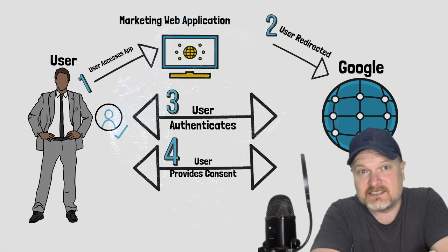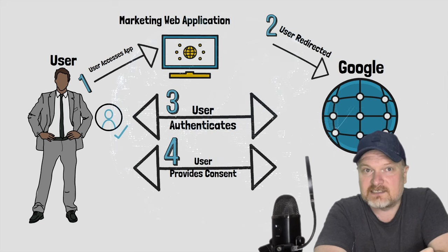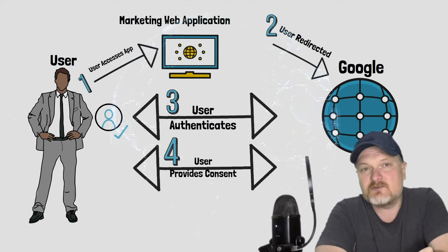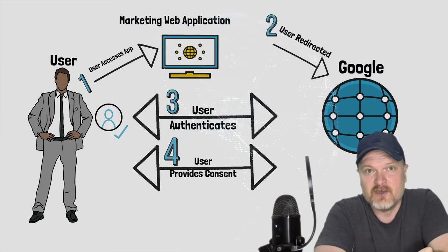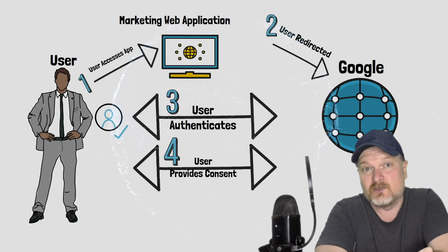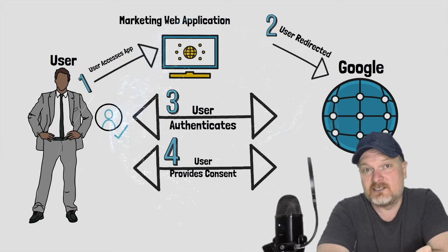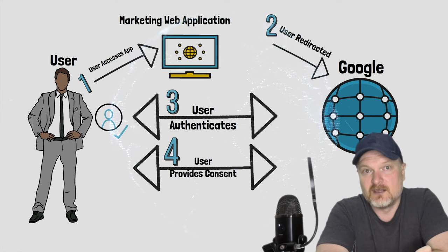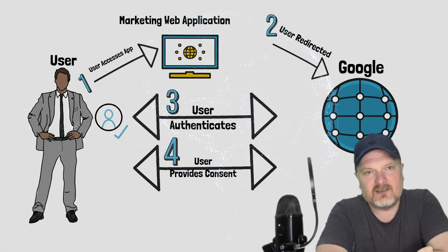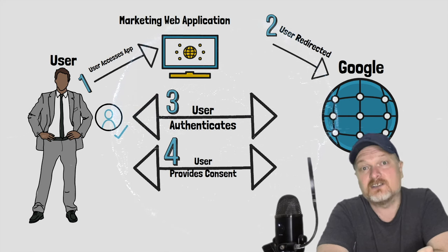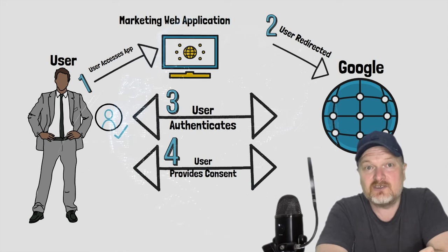A web page is presented to the user by Google showing that the marketing web application has requested read-only access to the user's Google contacts. The user can either give consent or explicitly deny consent. If consent is denied, the marketing web application cannot import the user's Google contacts and cannot carry out the relevant marketing campaign.